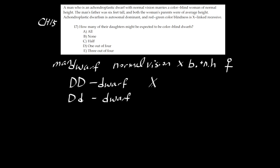For color blindness: if you're a boy with X-little-n and Y, you're colorblind. If you're a girl, you need both recessive genes — X-little-n, X-little-n — to be colorblind.